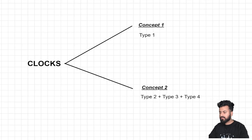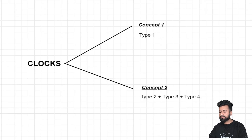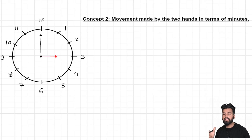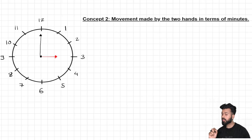It does not mean that this chapter has only four types of problems — there are other types also. But as far as the concepts are concerned, there are only two concepts which I am going to discuss. Now let us start with the second concept, where we are going to talk about movement made by the two hands in terms of minutes. In the last lecture, we talked about movement in terms of degrees. Here, we talk about movements in terms of minutes — that's the only change.